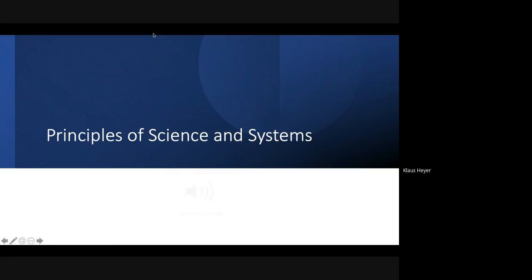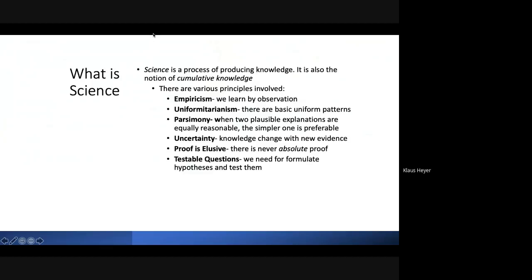We are covering two topics: the scientific method and scientific process, and systems. These are two different topics but both appropriate for environmental science. Let's start with the part on science first.